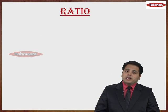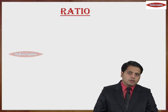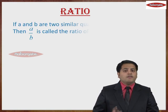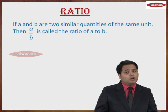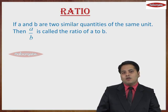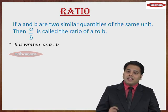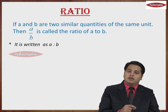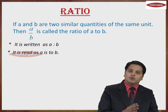Now Ratio is basically a comparison between 2 similar quantities. For example, if A and B are 2 similar quantities with the same units, then A upon B is called as the Ratio of A to B. While writing, it is written as A colon B. But while reading it, we will be reading it as A is to B.